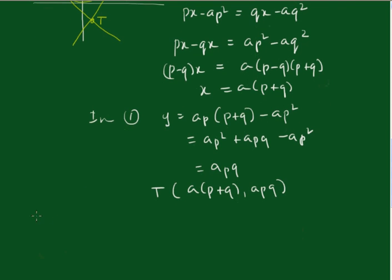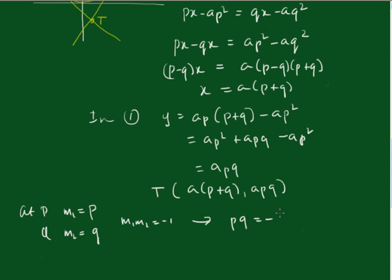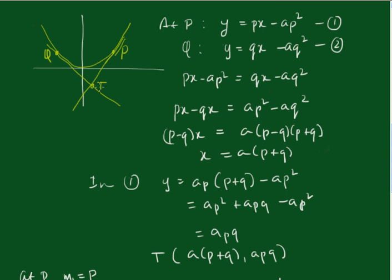Because these tangents meet at right angles, m1 times m2 equals negative 1. At P the gradient is p and at Q the gradient is q, so pq equals negative 1. Substituting pq equals negative 1 into y equals apq gives y equals minus a. This is the equation of the locus — the directrix. All tangents that meet at right angles will meet on the directrix.